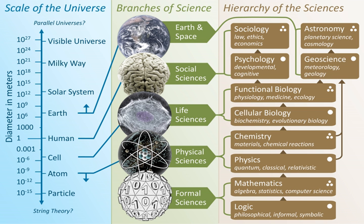The formal sciences are the branches of science that are concerned with formal systems, such as logic, mathematics, theoretical computer science, information theory, systems theory, decision theory, statistics, and theoretical linguistics. Unlike other sciences, the formal sciences are not concerned with the validity of theories based on observations in the real world, but rather with the properties of formal systems based on definitions and rules.